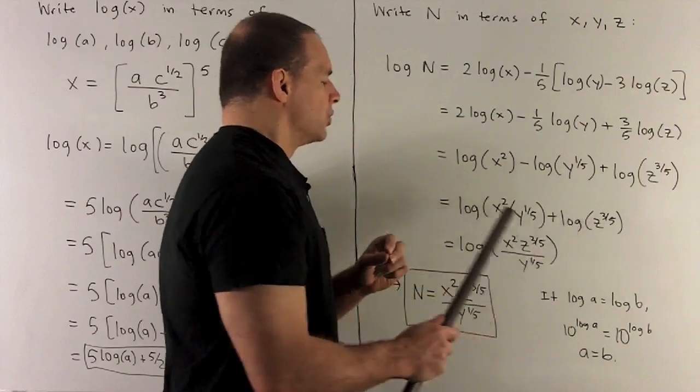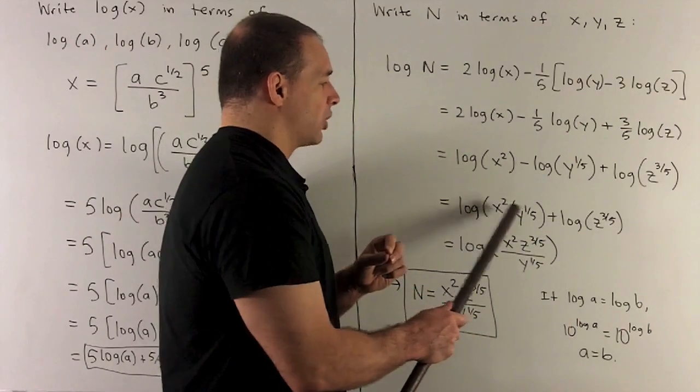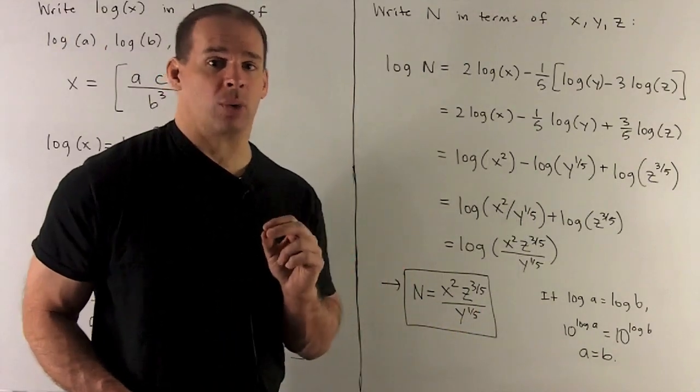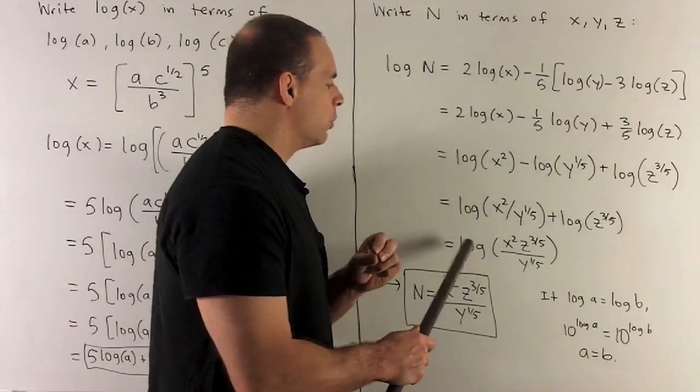We'll leave this term alone. Now we have a sum. So now what I want to do is take this term and this term, multiply them together, put them on the inside of log. So that's our product rule for log.